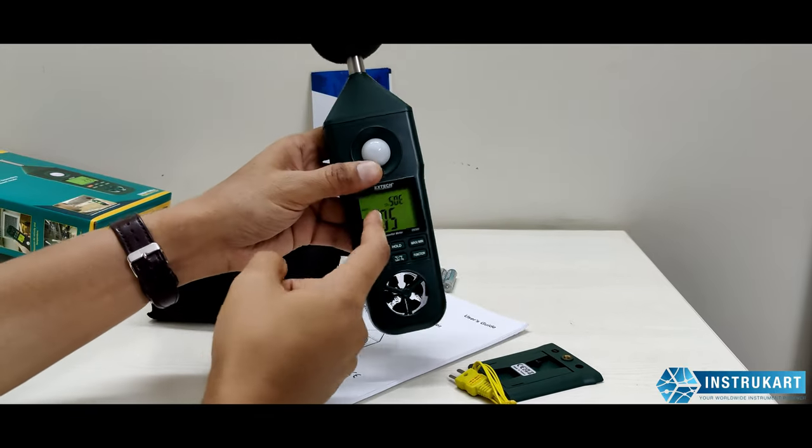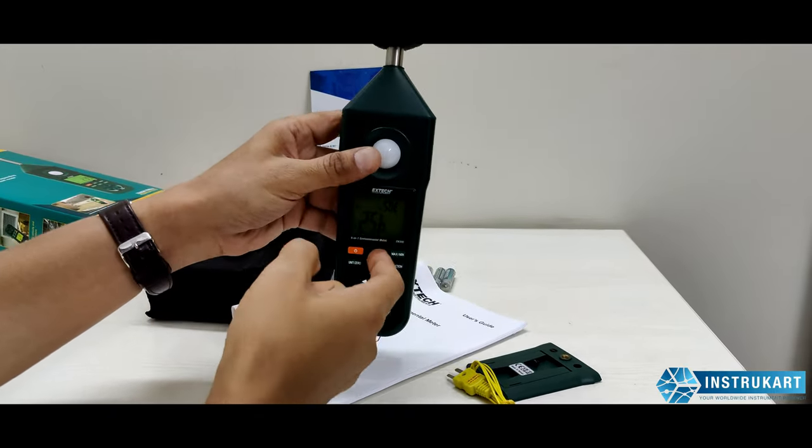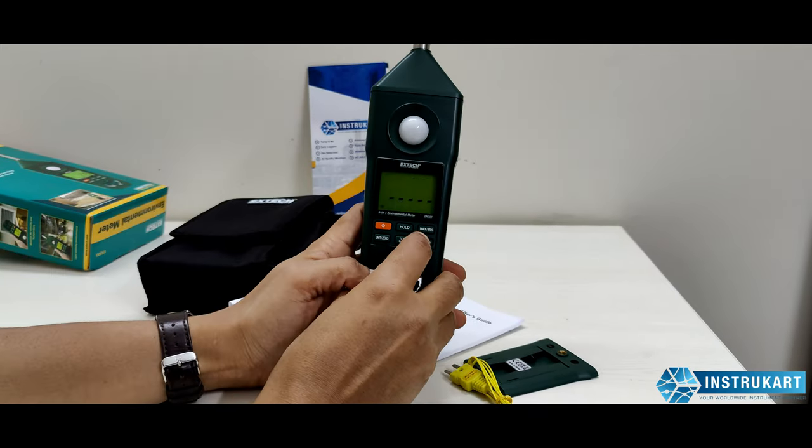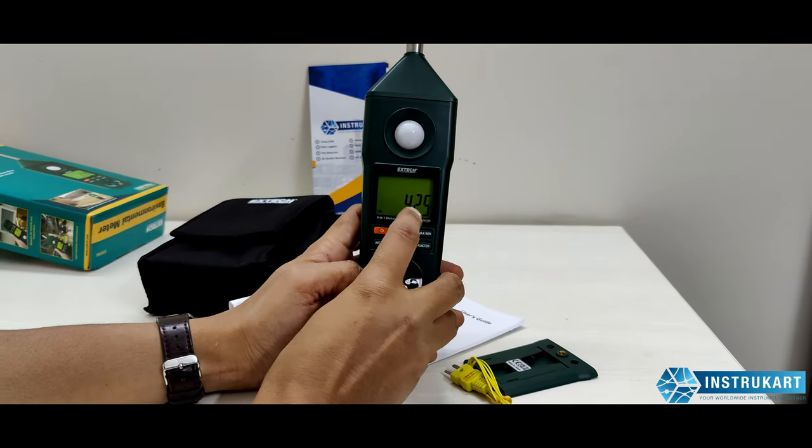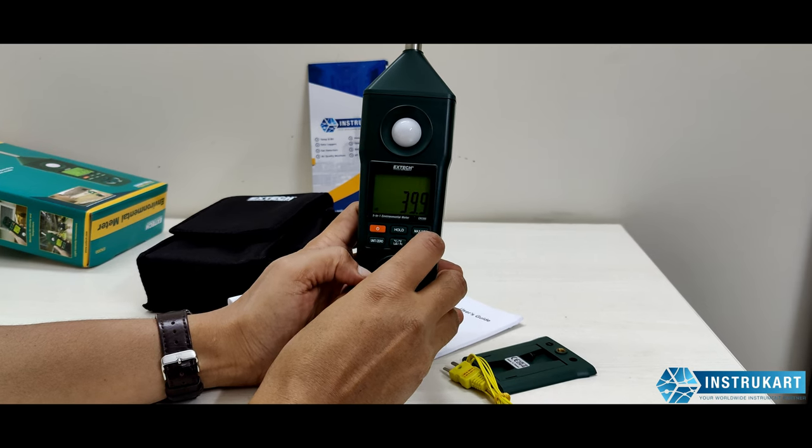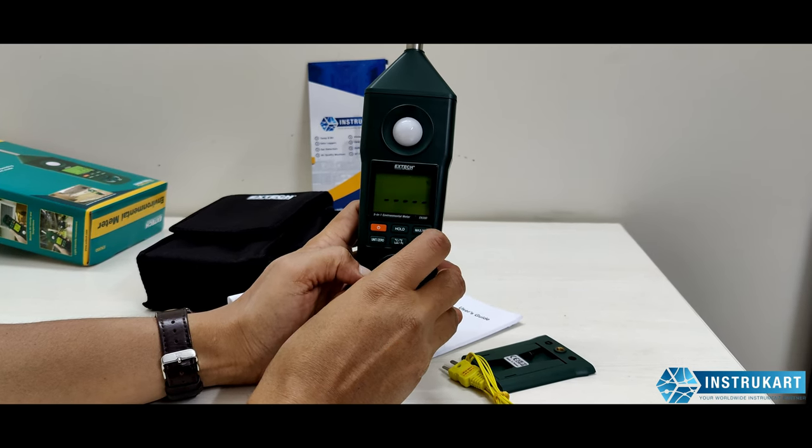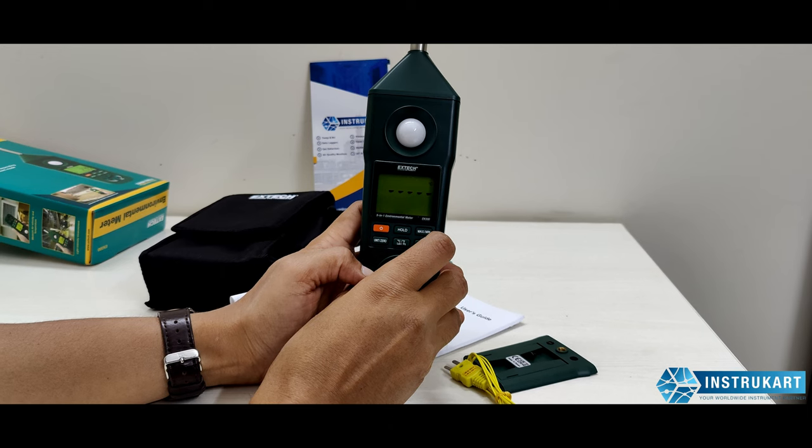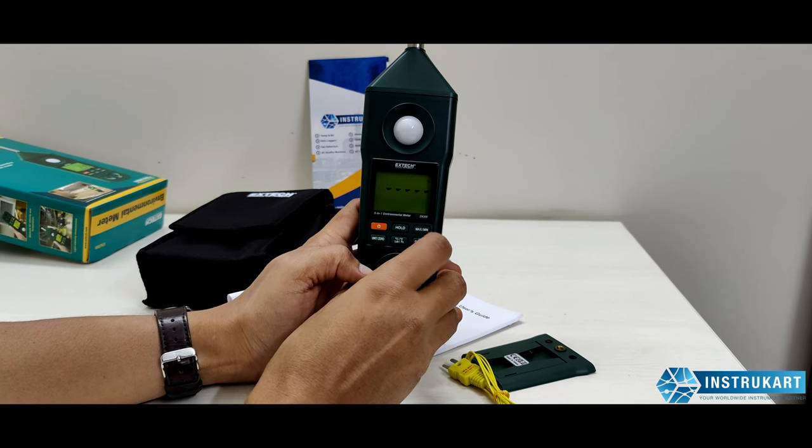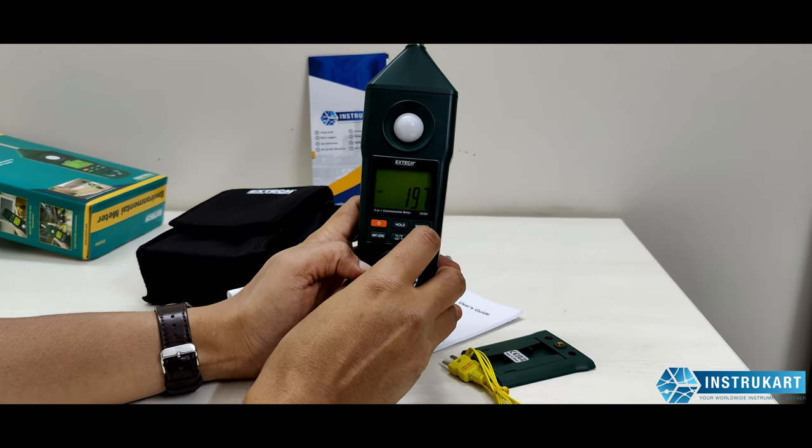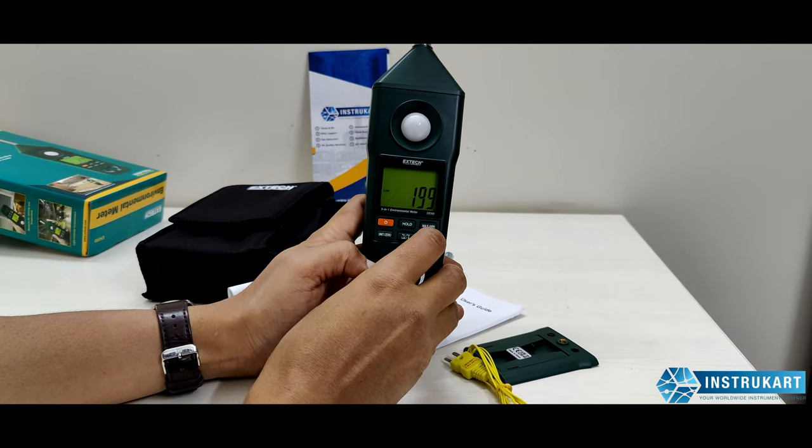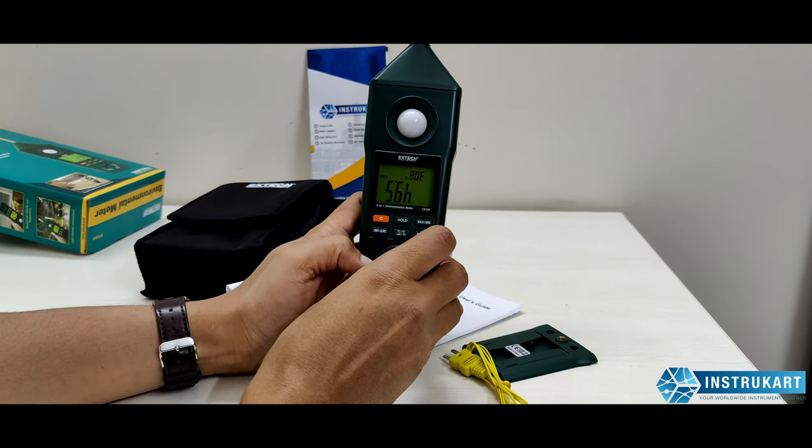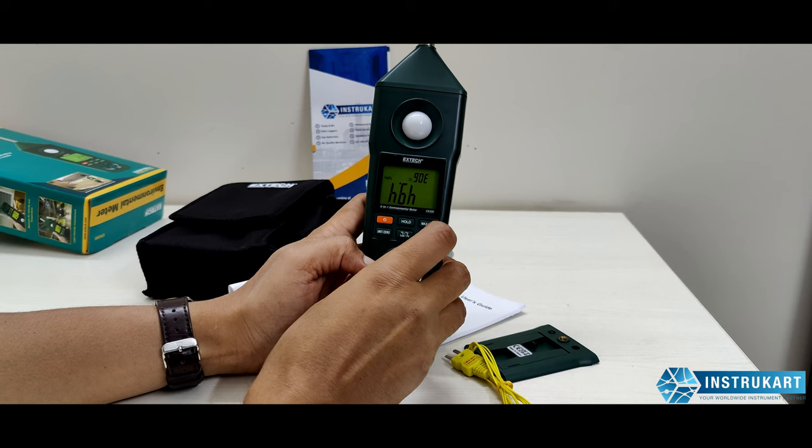This can be toggled up and down using the function button. It shows the dB level, the LUX level, temperature, and RH.